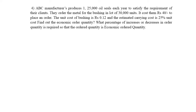The question says: ABC Manufacturers produces 1,25,000 oil seals each year to satisfy the requirement of their client. The order of the metal for pushing is placed in a lot of 30,000 units. It costs rupees 40 to place an order. The unit cost of pushing is rupees 0.12, and the estimated carrying cost is 25% of the unit cost. Find the economic order quantity and what percentage increase or decrease in order quantity is required so that the order quantity equals the economic order quantity.